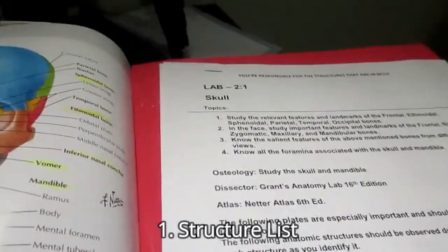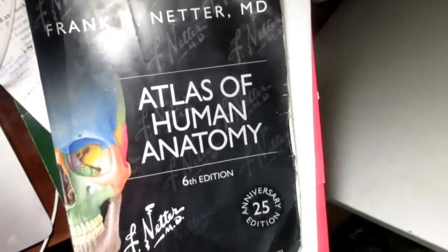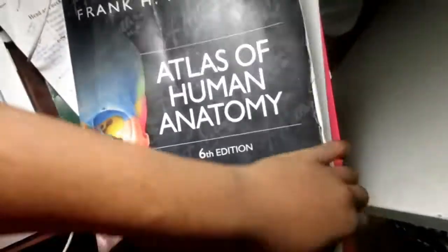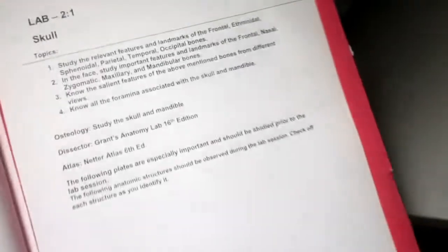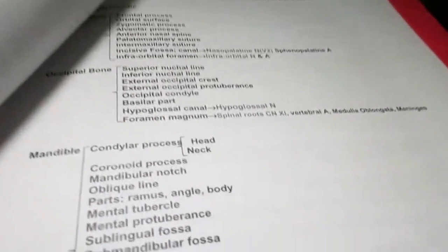Okay, so how I usually study for anatomy: I start by looking at all of my structures in the Netter's Atlas. This is the Netter's Atlas, and this section is the head and neck. I have my structure list, which is basically a paper that just lists all of the structures that we'll be responsible for.